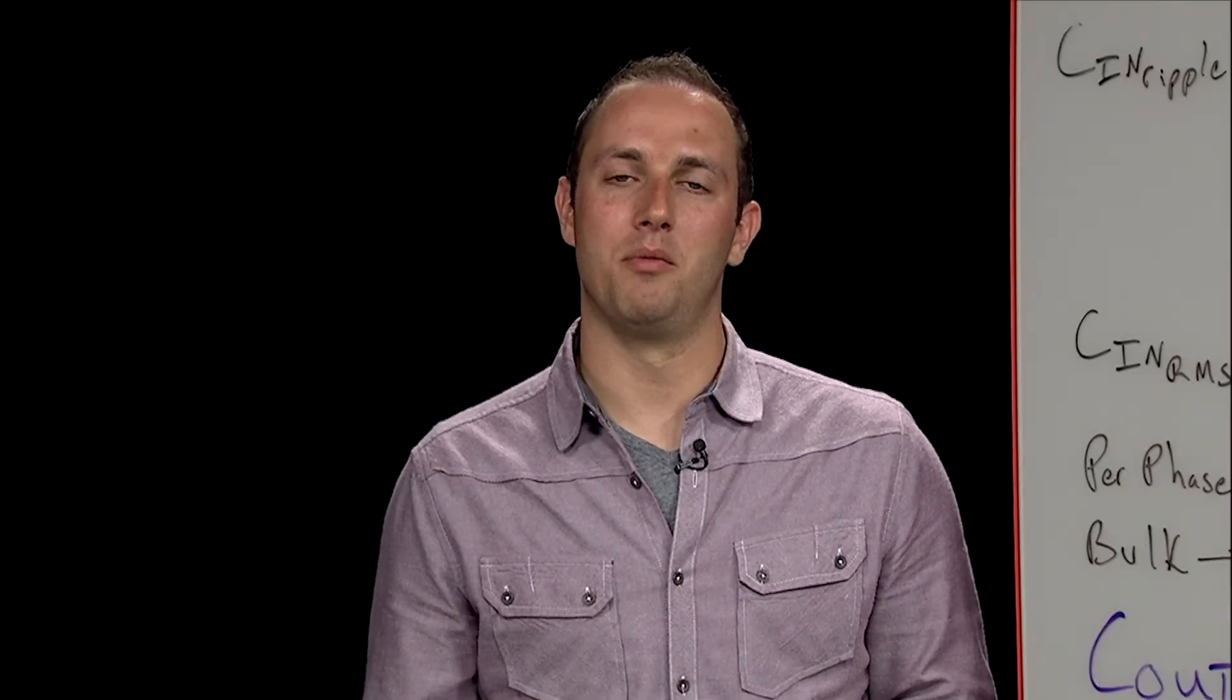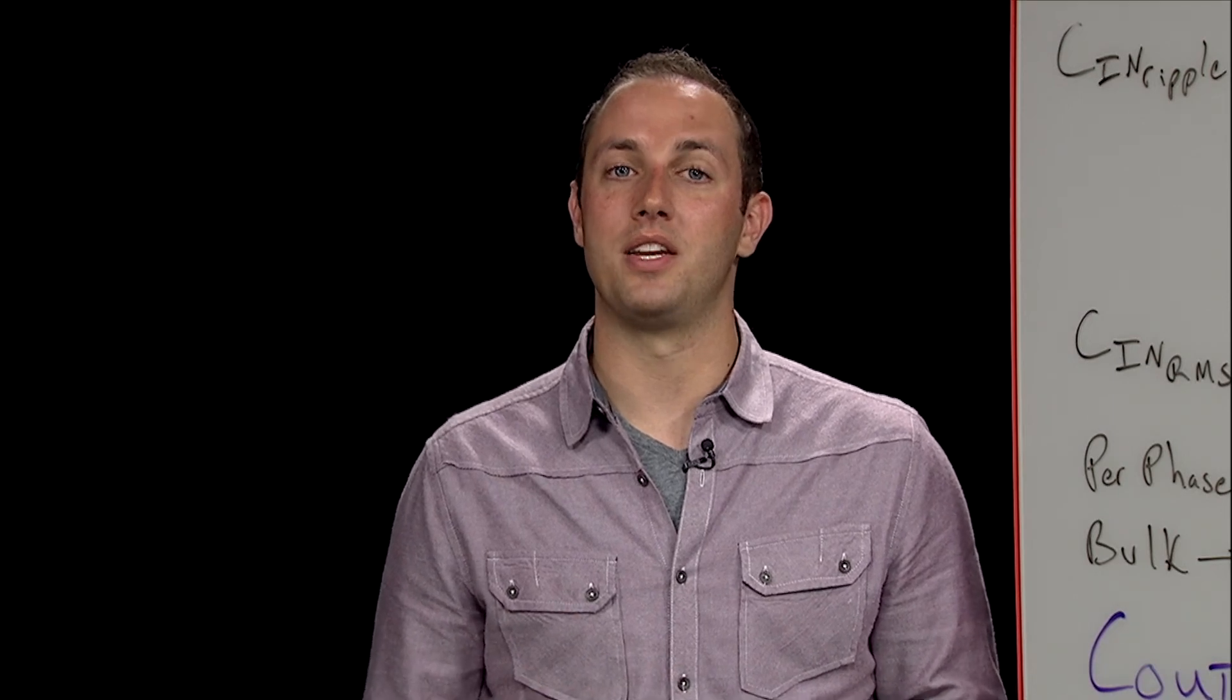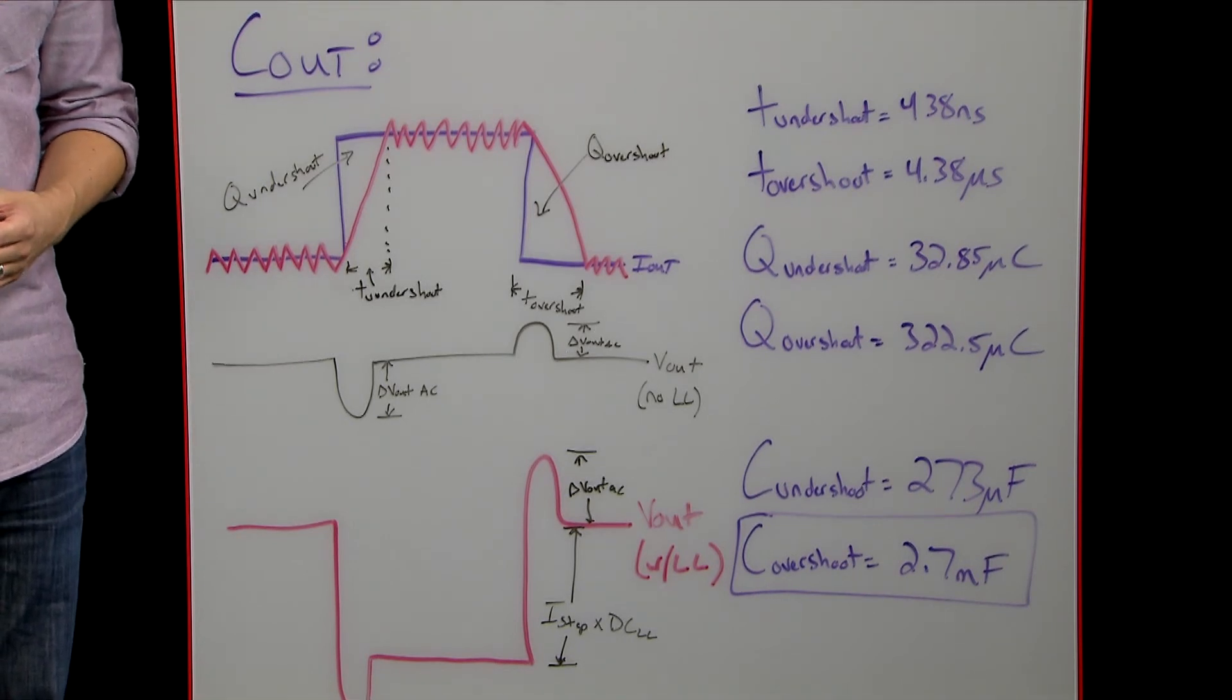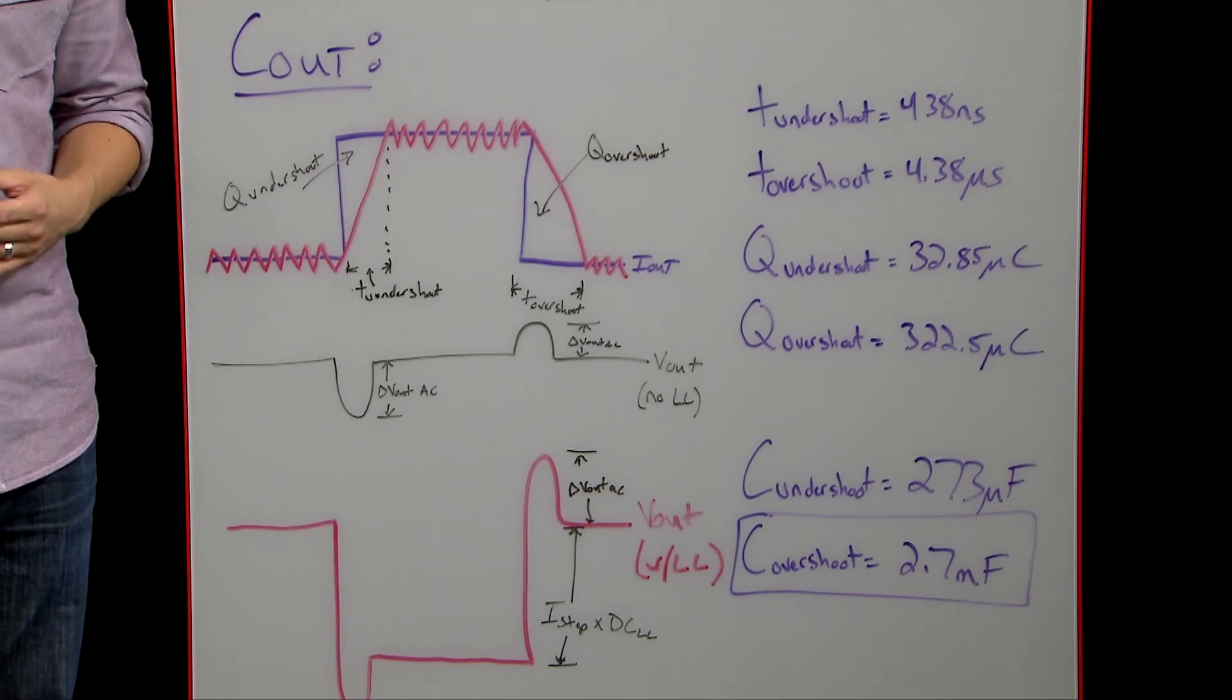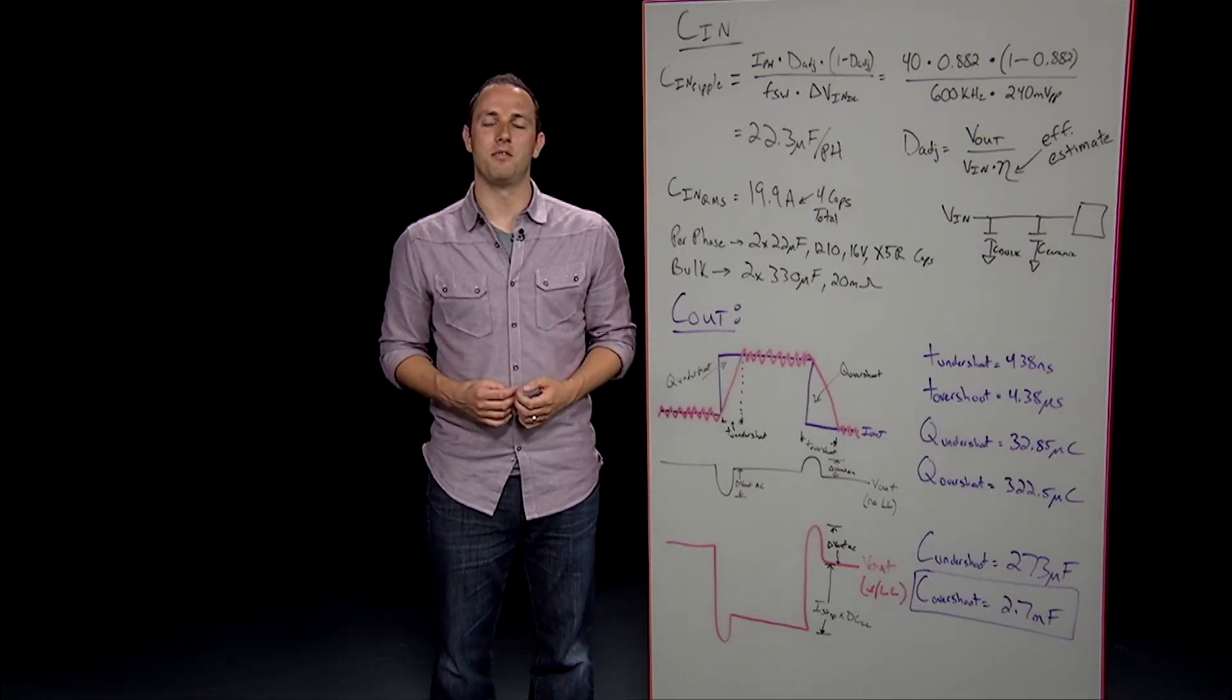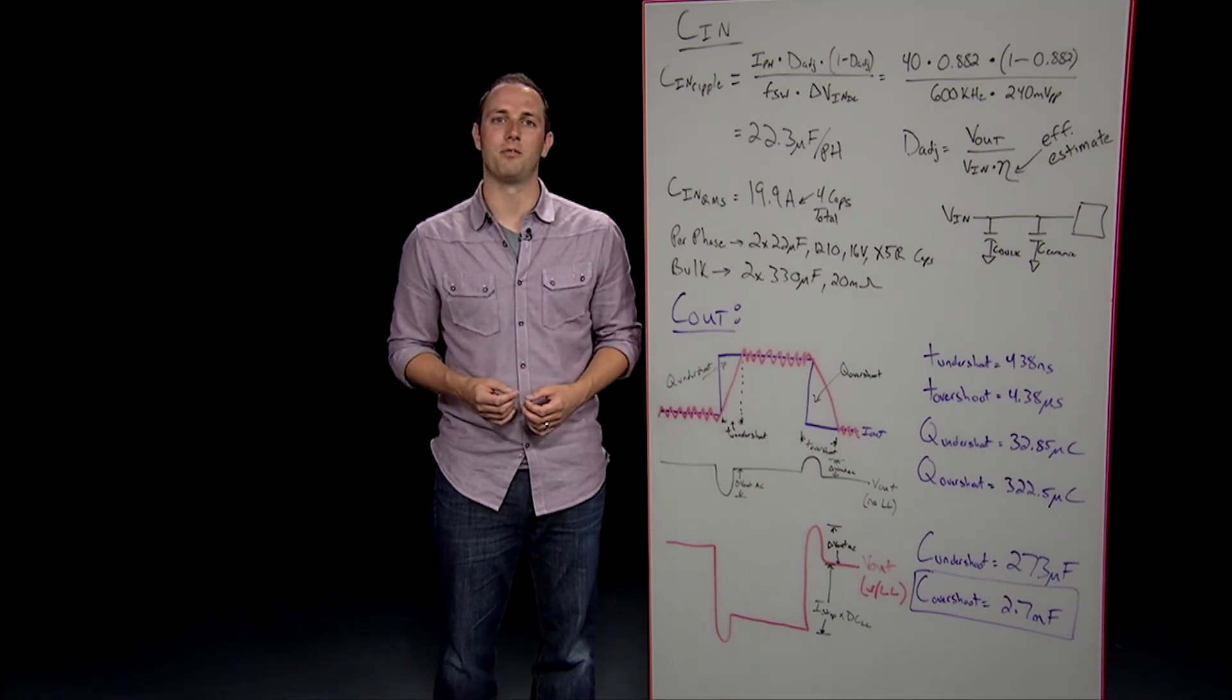Output capacitance is also implemented using both bulk and ceramic caps, but using all ceramic for a design is possible for some applications. For high-current performance applications such as this one, with a 150-amp load step, the amount of capacitance needed to meet the transient specs will far exceed the amount calculated for DC ripple, so meeting the transient will automatically give us the other spec for free. Meeting the AC specs in Vout requires calculating the capacitance needed for both the load step and the release as the numbers are very different.